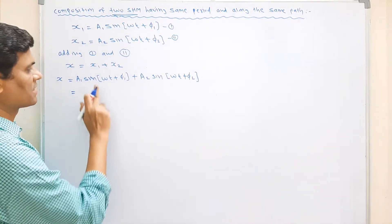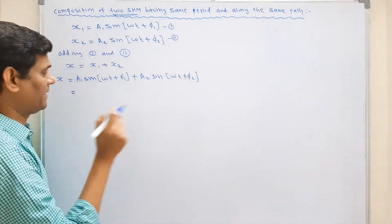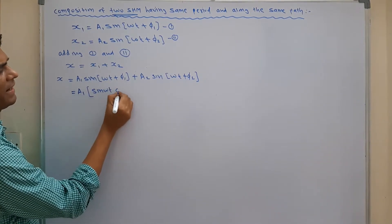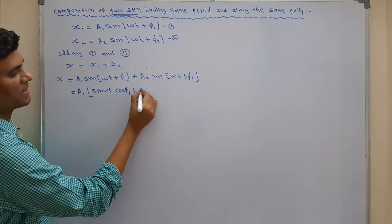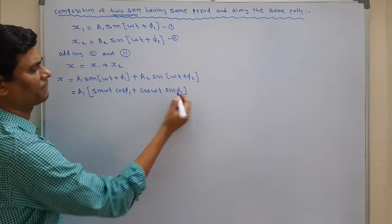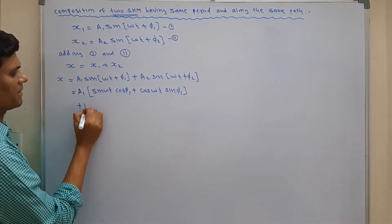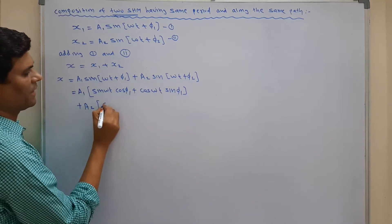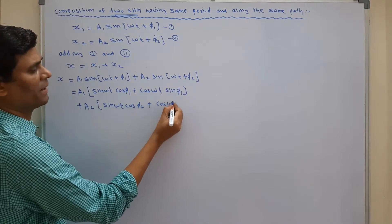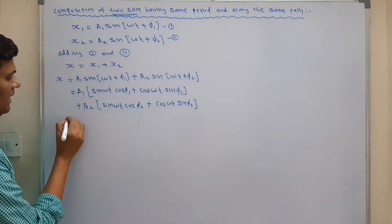Using the sine addition formula sin(A+B) = sin A cos B + cos A sin B, we expand: A1 times (sine omega t cos phi 1 plus cos omega t sine phi 1), plus A2 times (sine omega t cos phi 2 plus cos omega t sine phi 2).